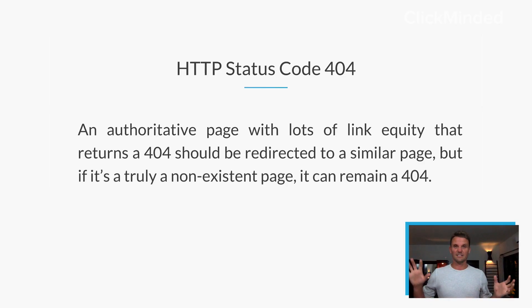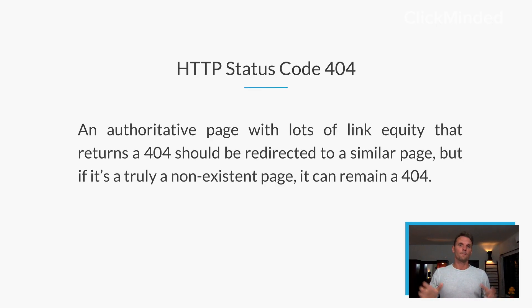An authoritative page, however, that has a ton of links, used to have content, and is now serving a 404 — that's not good. You generally want to redirect old pages that have a lot of link equity to the most similar page you have, or maybe even recreate that page on a new URL. You don't need to redirect every 404 you have. However, if you have old legacy pages with a ton of link value and a ton of links from external sites pointing to them, you generally want to implement something like a 301 redirect to save that link equity.